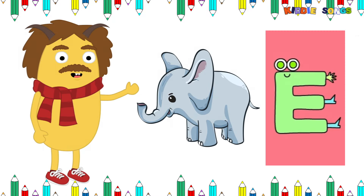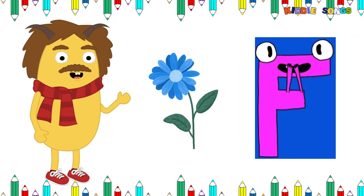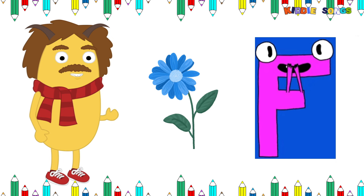E is for elephant. E, e, elephant. F is for flower. F, f, flower.